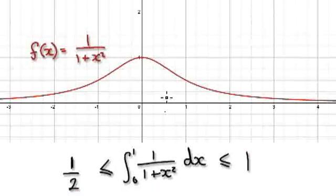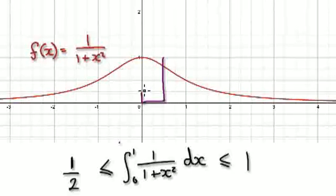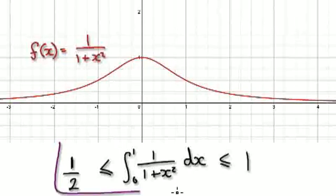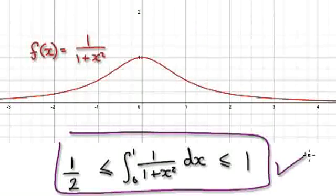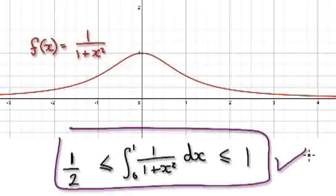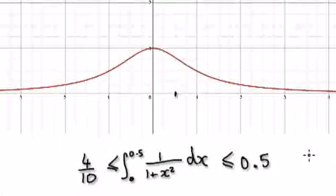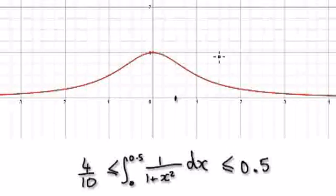You can make an improvement on this estimate by splitting it into two areas — one area here and then another one over here. This estimate is okay, but we can improve it by splitting up the area into two different parts.